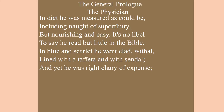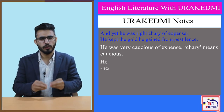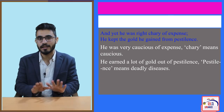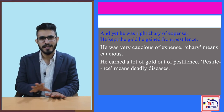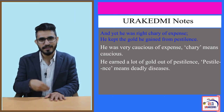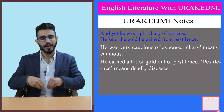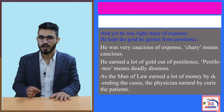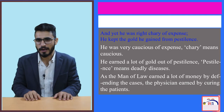'And yet he was right chary of expense; he kept the gold he gained from pestilence.' He was very cautious of expense — chary means cautious — and he earned a lot of gold out of pestilence, meaning deadly diseases. Just as the Man of Law earned gold by fighting cases, this physician earned much gold by curing people of diseases. Diseases, for this physician, were a good thing, not a bad thing.